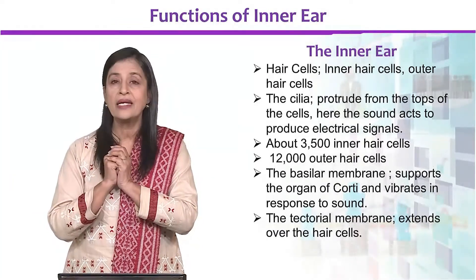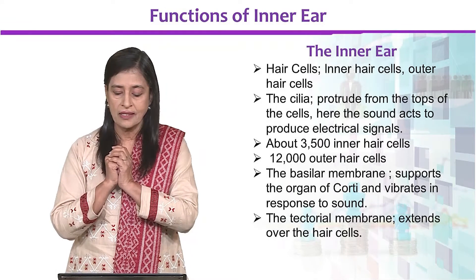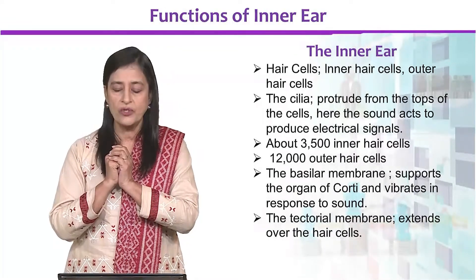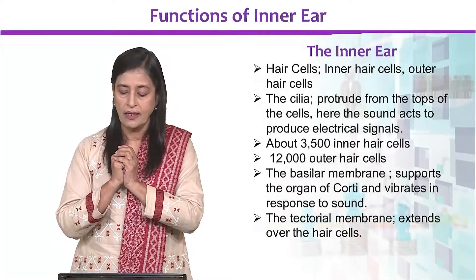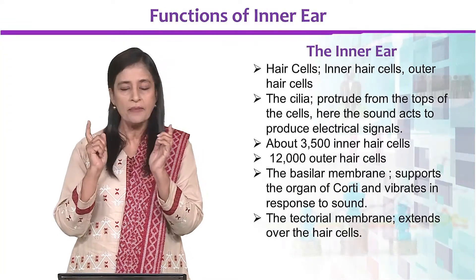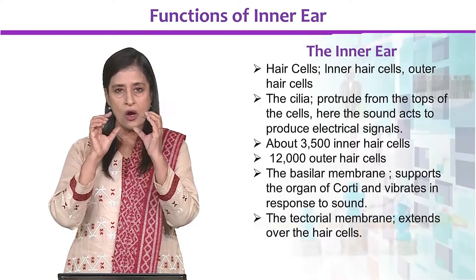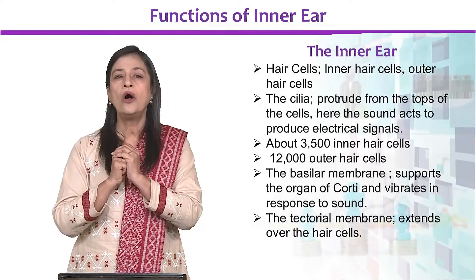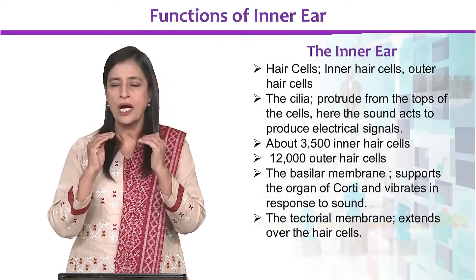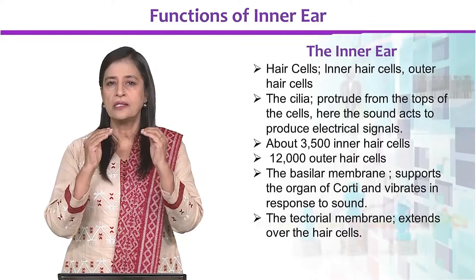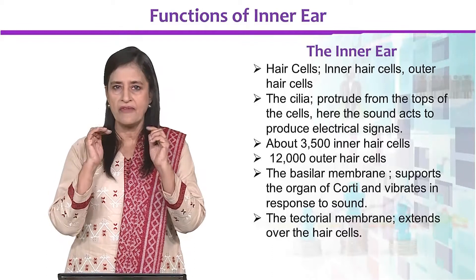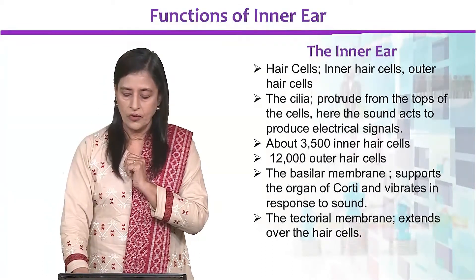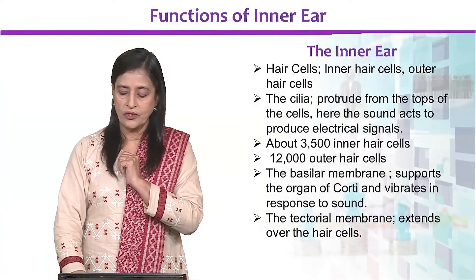There are inner hair cells and approximately 12,000 outer hair cells. The basilar membrane and organ of Corti support these cells. In response to sound, these structures generate signals.